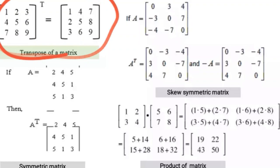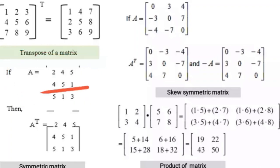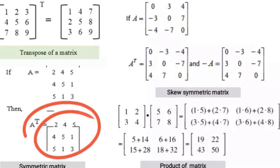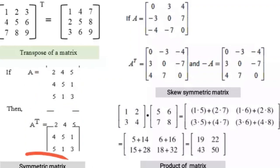For a symmetric matrix example, consider the matrix with values 2, 4, 5 / 4, 5, 4 / 5, 4, 3. When you compute the transpose, you get the same matrix back. Since the transpose of the matrix equals the original matrix, this is a symmetric matrix.